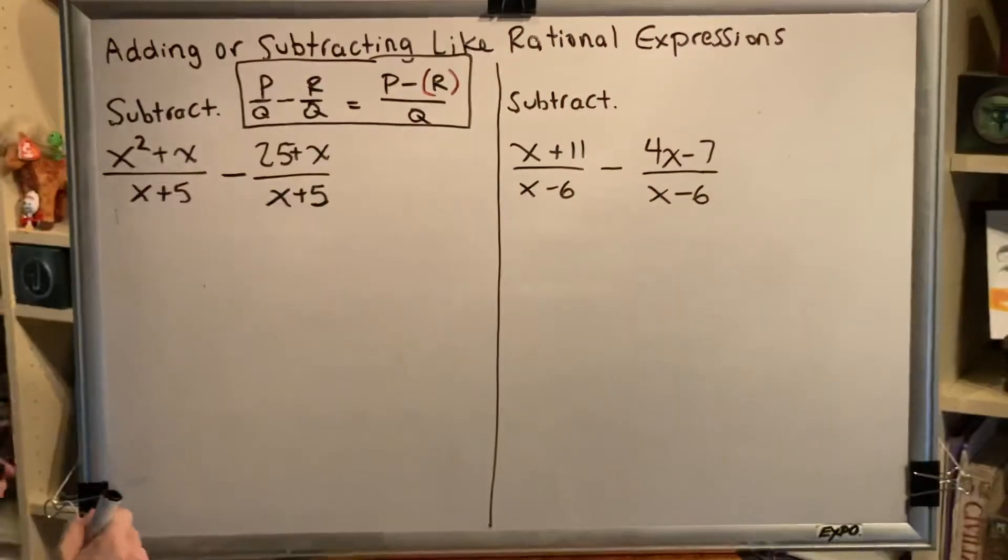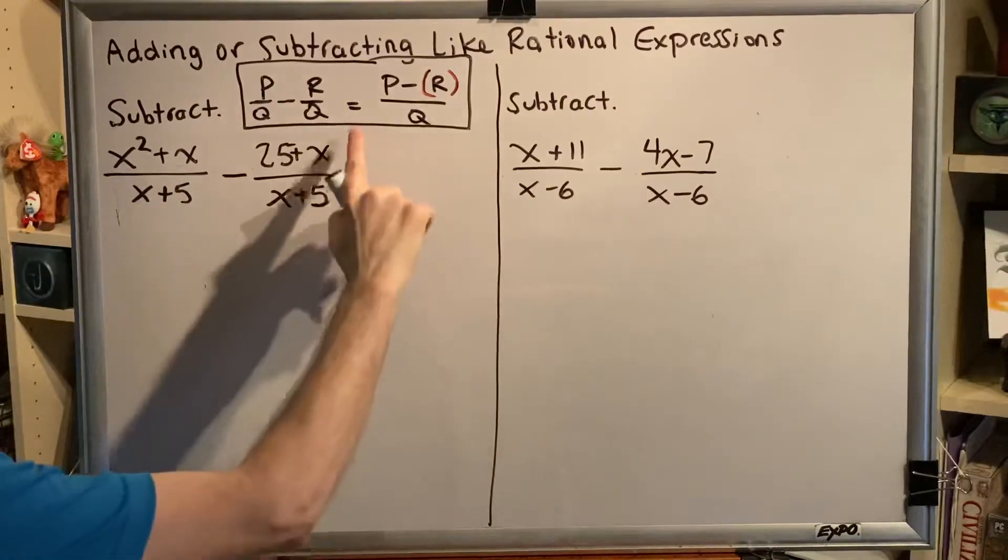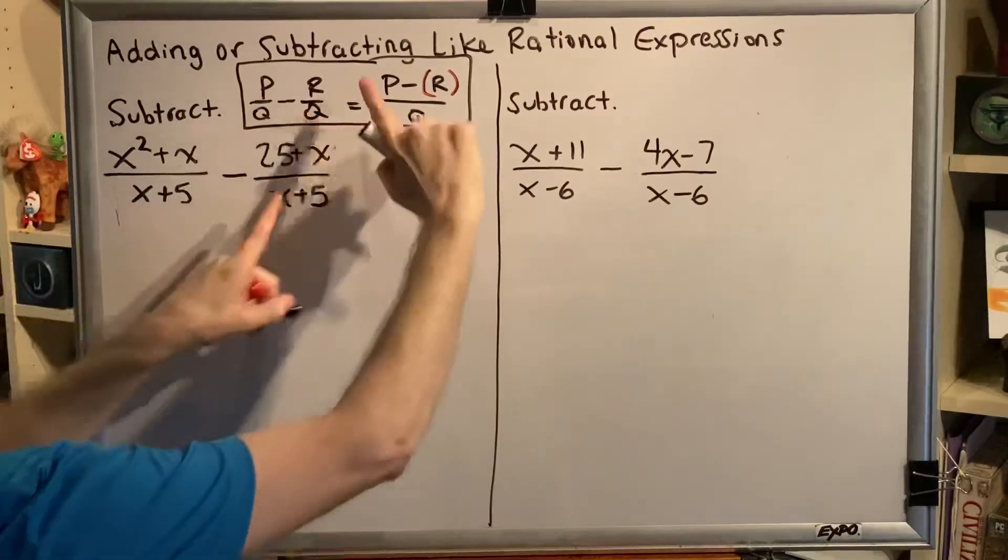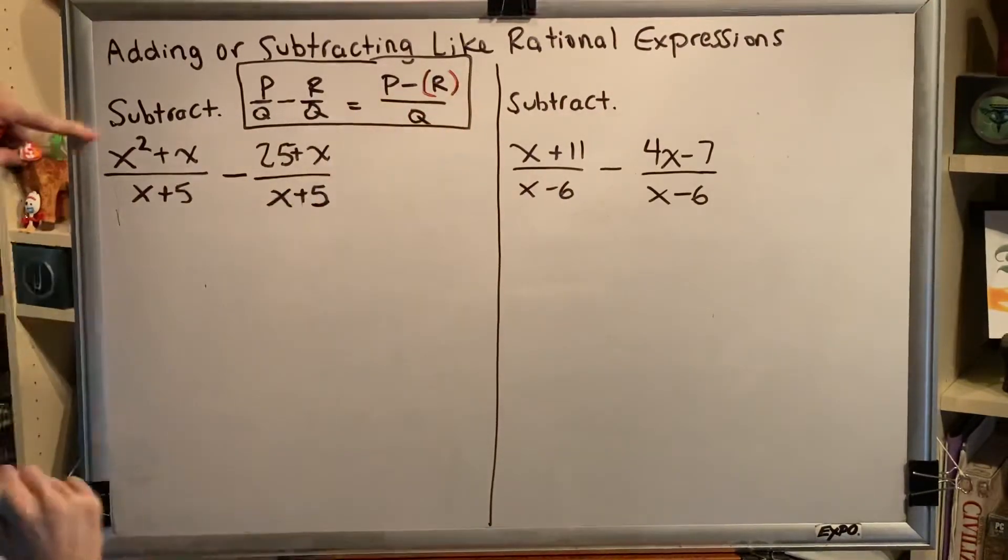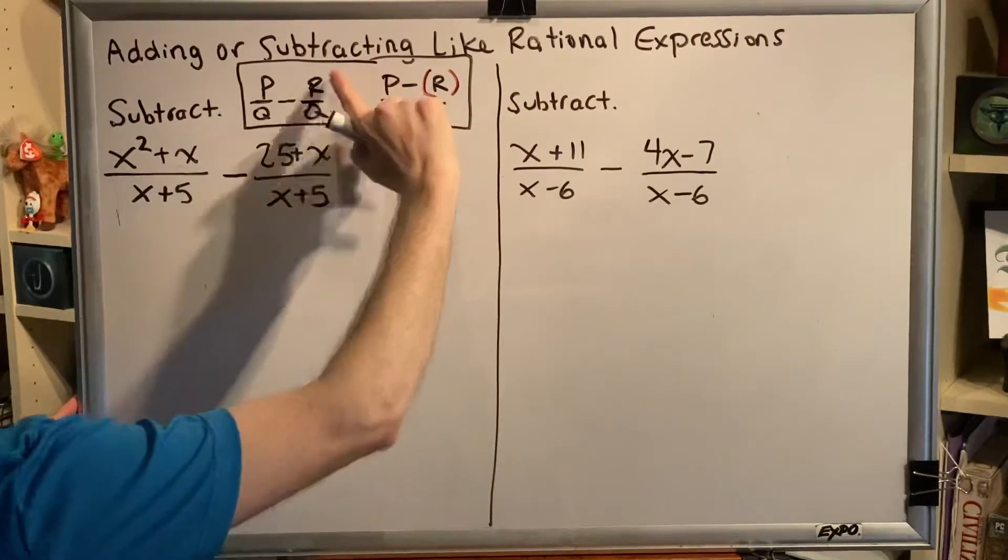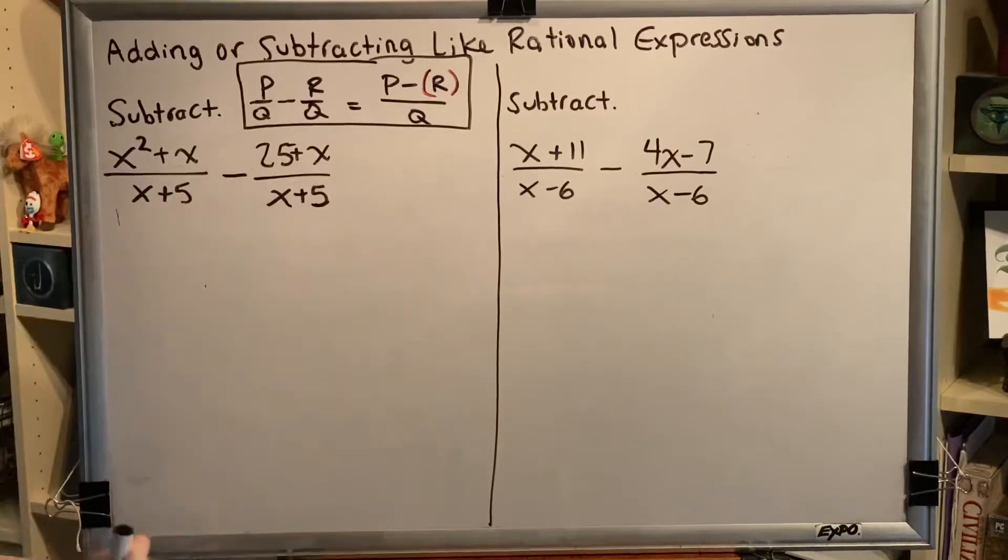Our first problem, we notice that the denominators match, and therefore we have a problem of the form p over q minus r over q, where the upper left numerator is p, the upper right numerator is r, and the shared or common denominator is x plus 5.